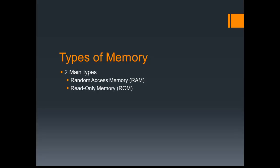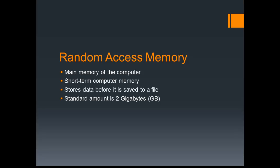There are two main types of memory: there's random access memory, or RAM, and read-only memory, or ROM. Random access memory essentially works like this — it's the main memory of the computer, so the computer will always look to it first to find the data it needs. It's the short-term memory of the computer, so when you turn the computer off, it essentially just gets rid of it. You need a different source to keep your data after you turn the computer off, which we'll get to in a moment.